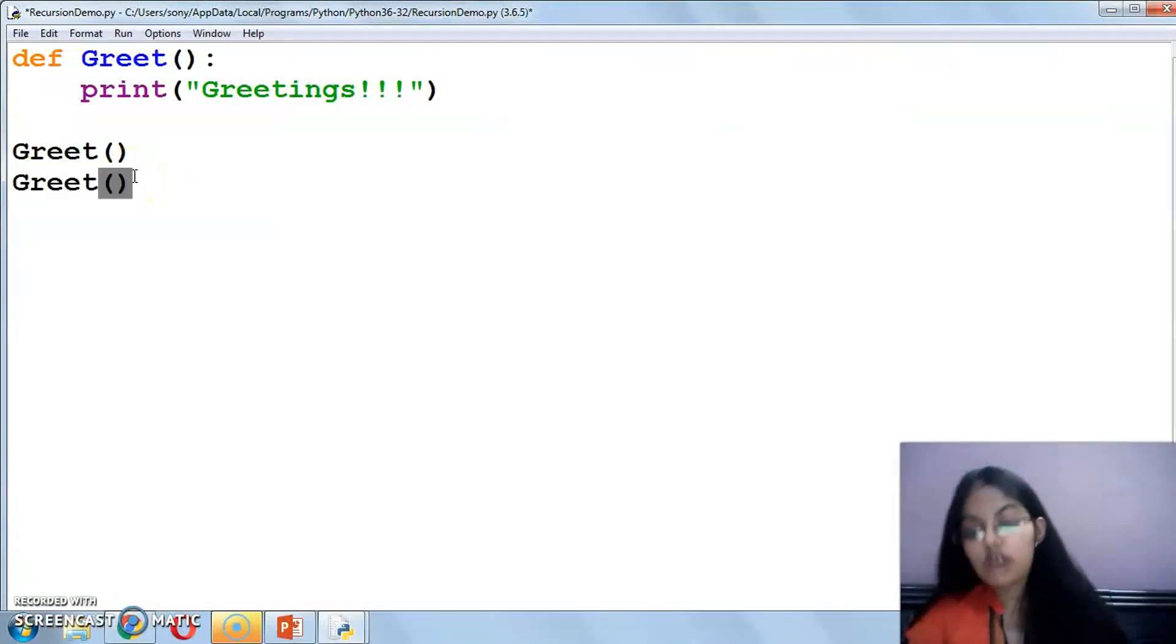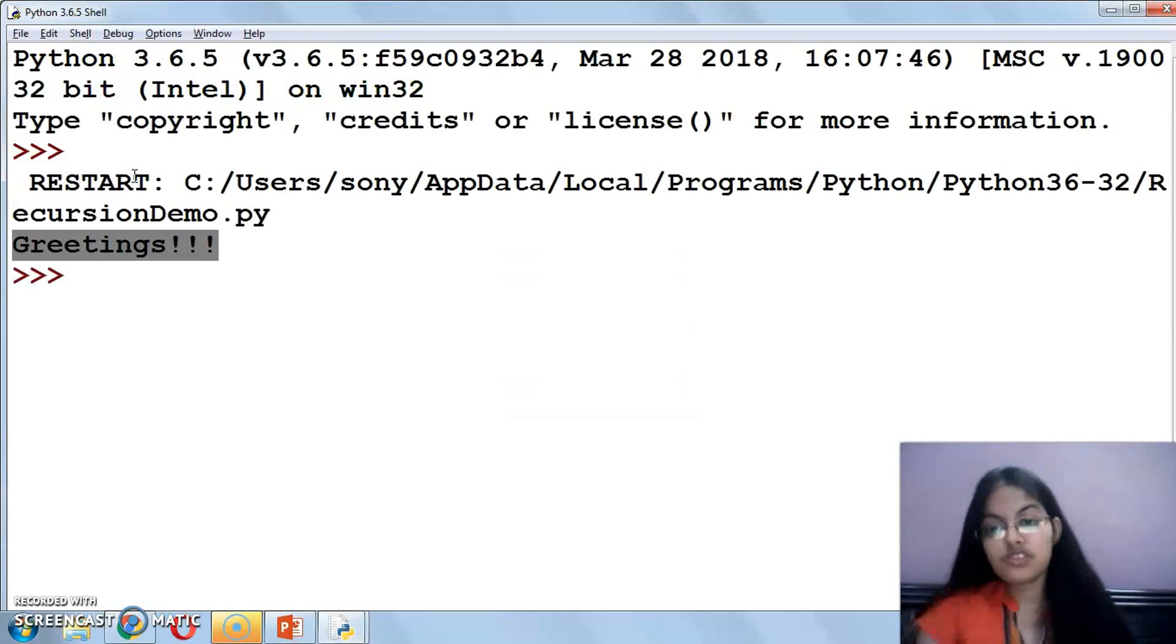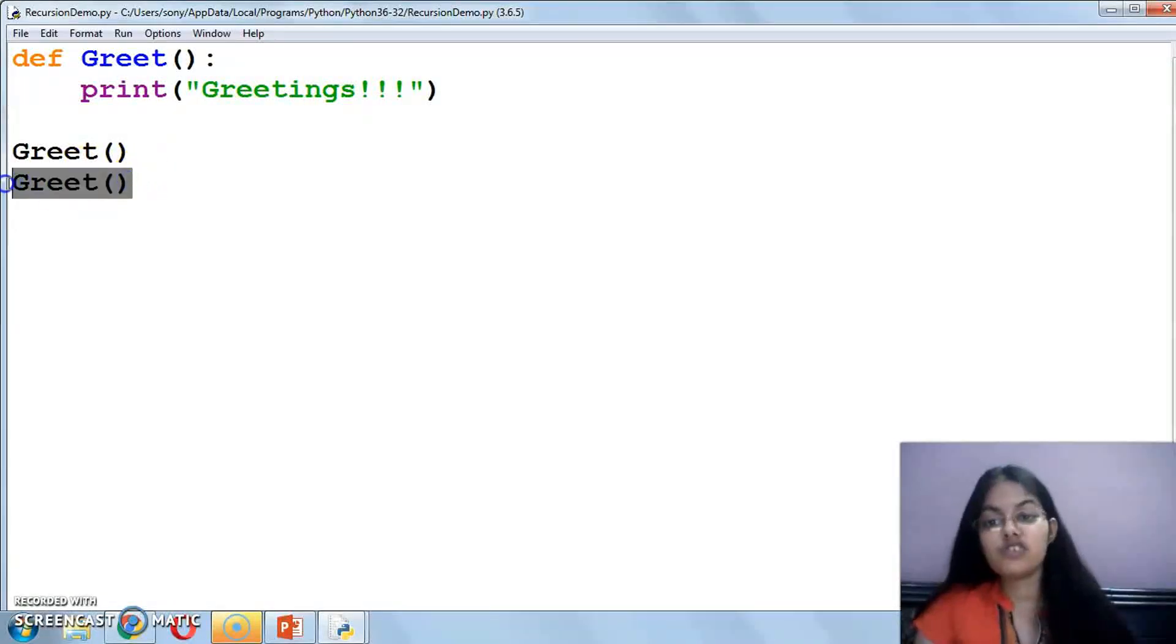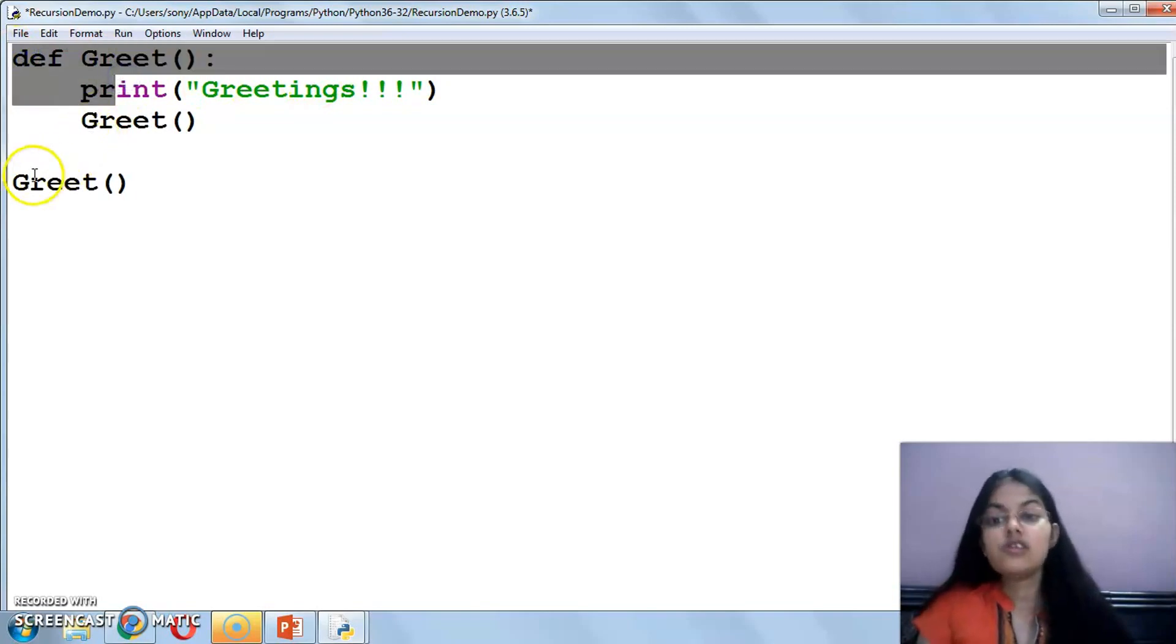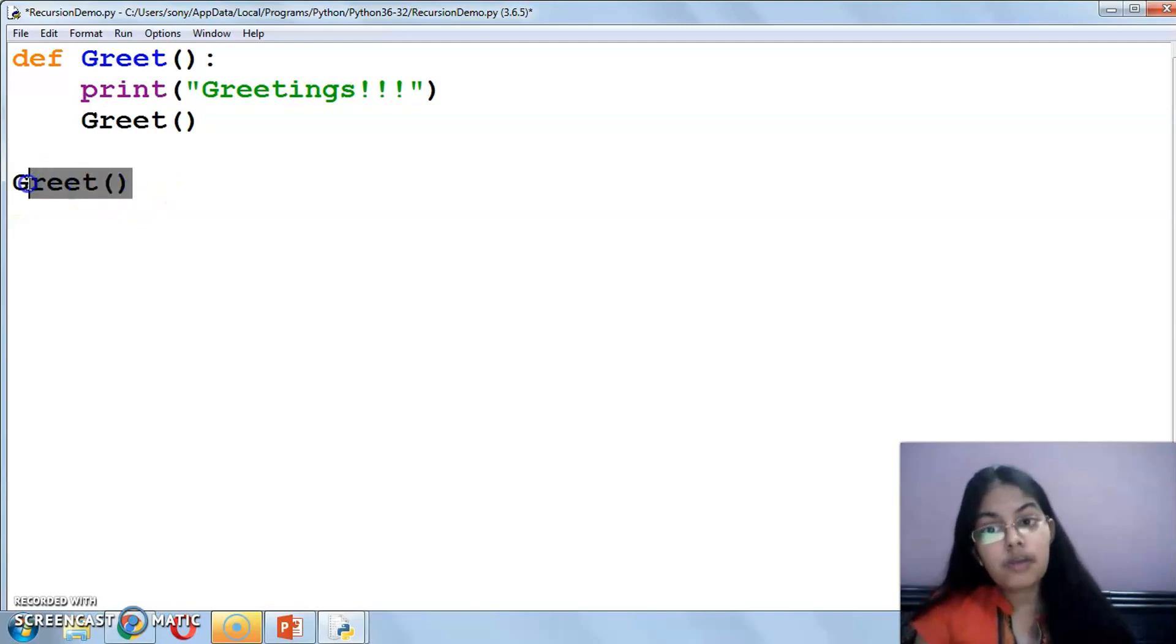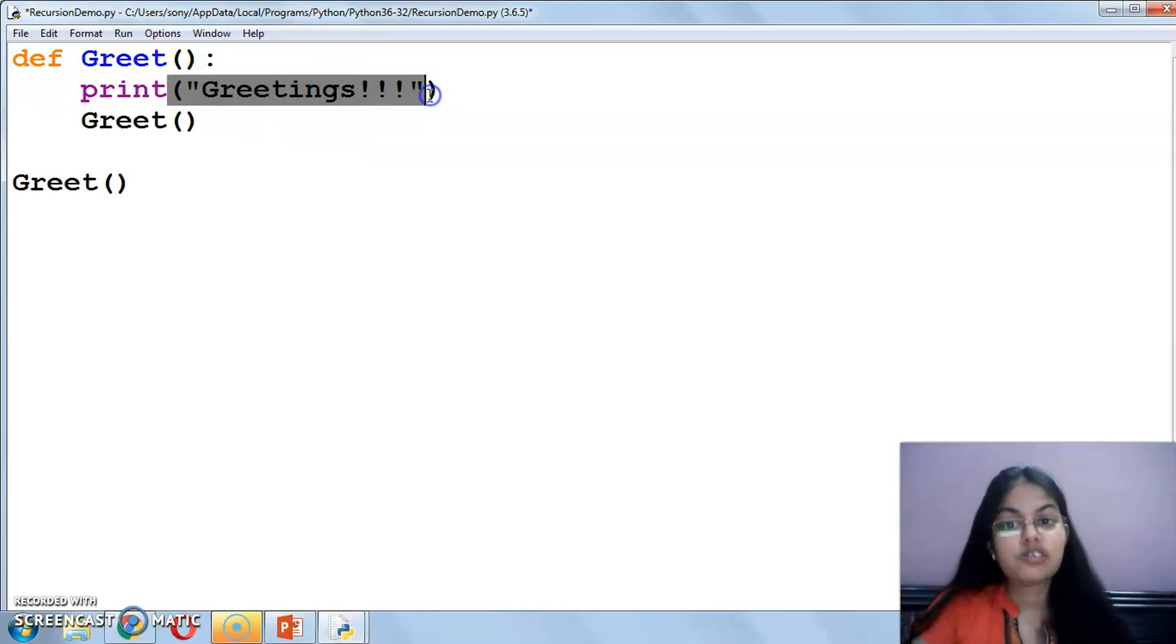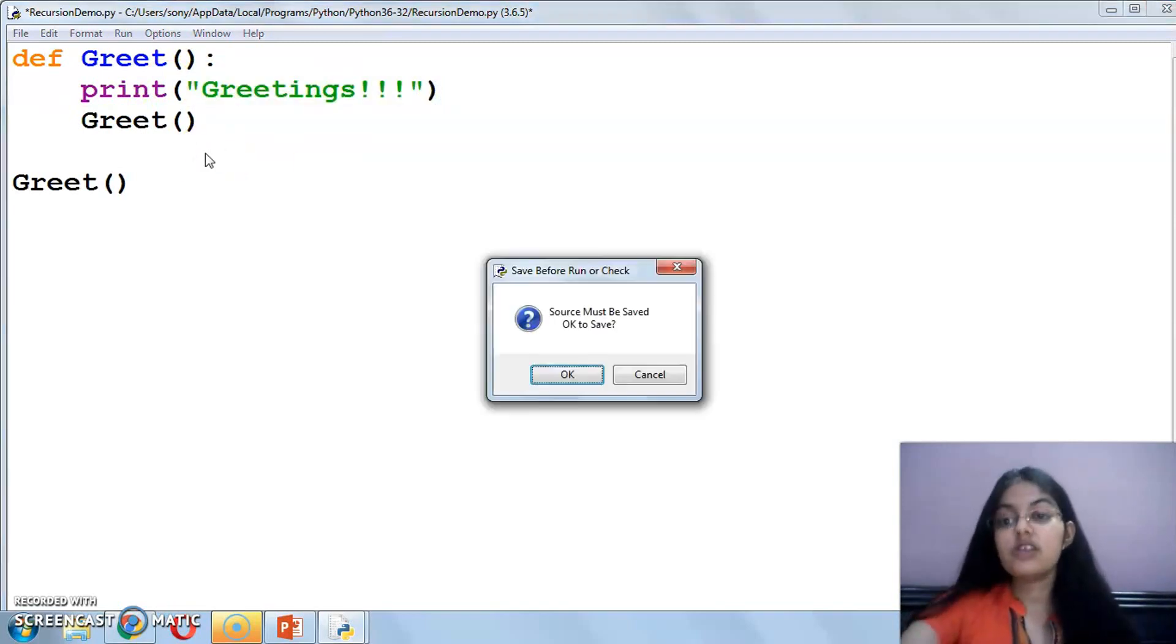If I call this function again, it will print two times the same message because I have called the function two times. But if I call the greet function within itself, what will be the flow of execution? First, this is the function definition statement, so it will move to here. Now it will simply print the message greetings, then again call the greet function. Then it will print the message again. This process will go on infinite times. This is called recursion.